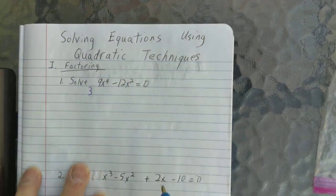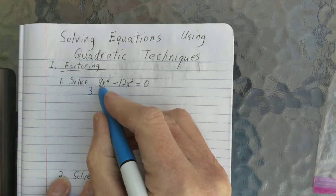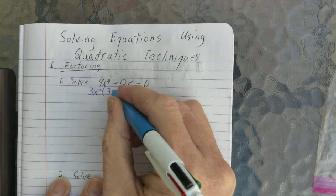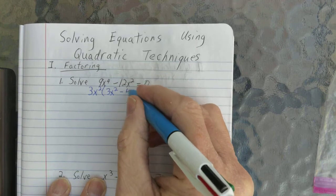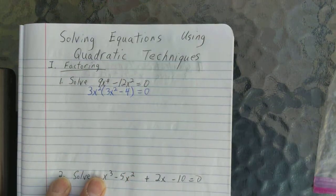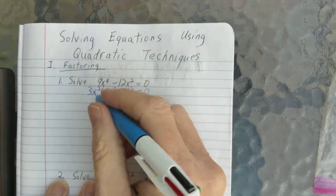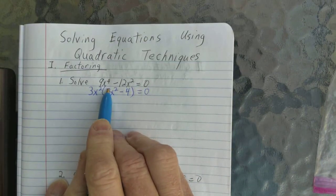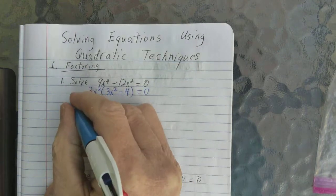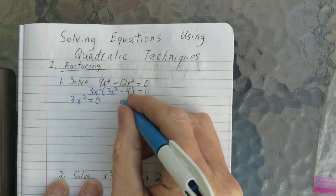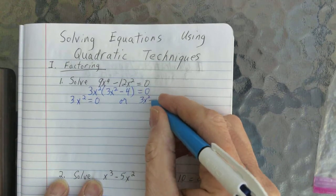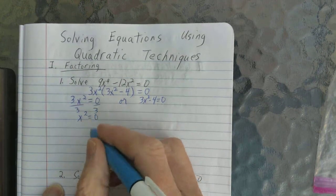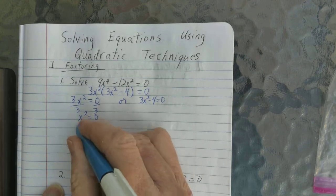I'm going to pull out the GCF first. It goes into nine and twelve, and also x squared, so I get 3x squared. Here I have 3x squared times (3x squared minus four) equals zero. Now I've got it factored. Setting each part equal to zero: 3x squared equals zero, or 3x squared minus four equals zero. Dividing by three, x squared equals zero, so x equals zero.